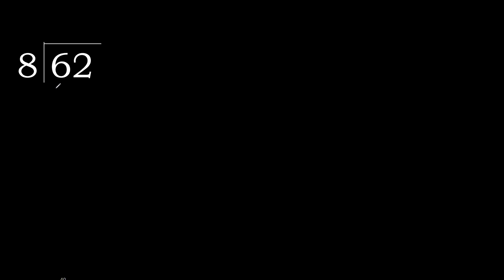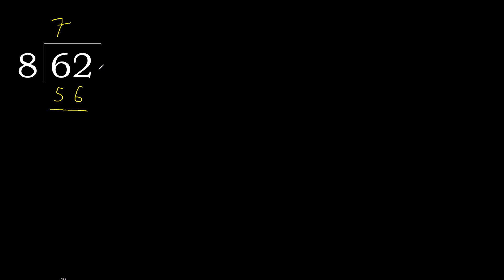62 divided by 8: 6 is less, therefore next. 62 is not less, therefore with 62 — 8 multiplied by which number is nearest to 62 but not greater? 8 multiplied by 8 is 64, which is greater. Multiplied by 7 is 56, which is not greater.